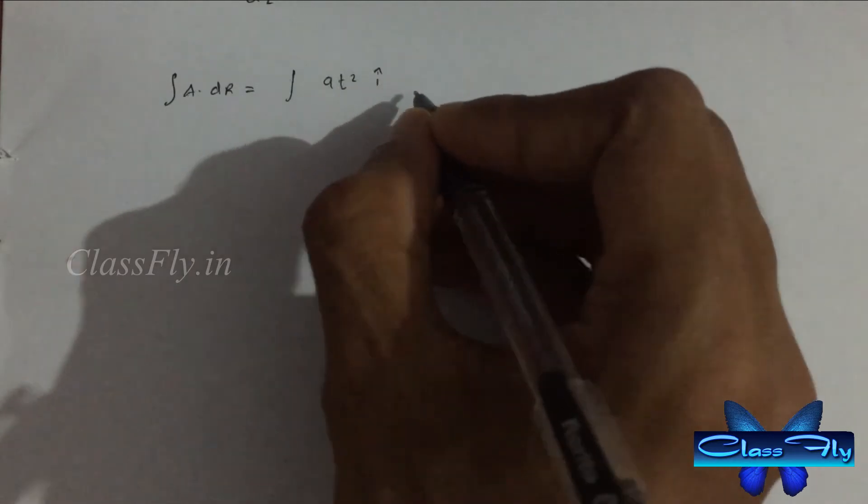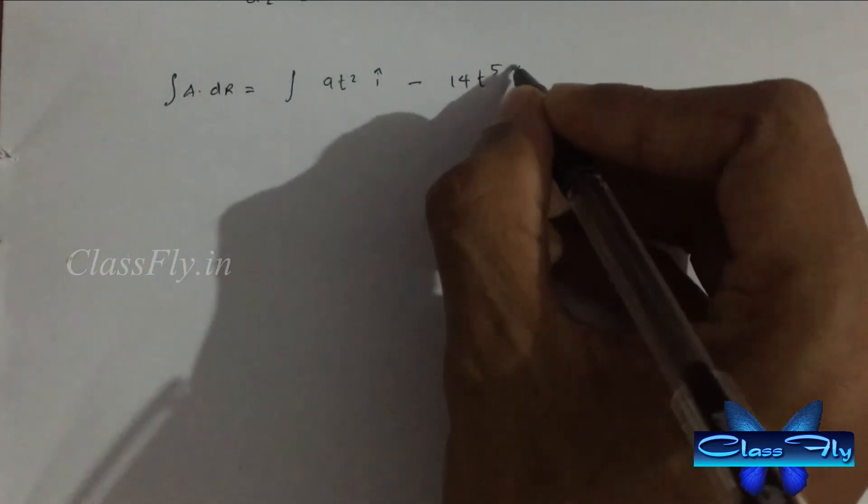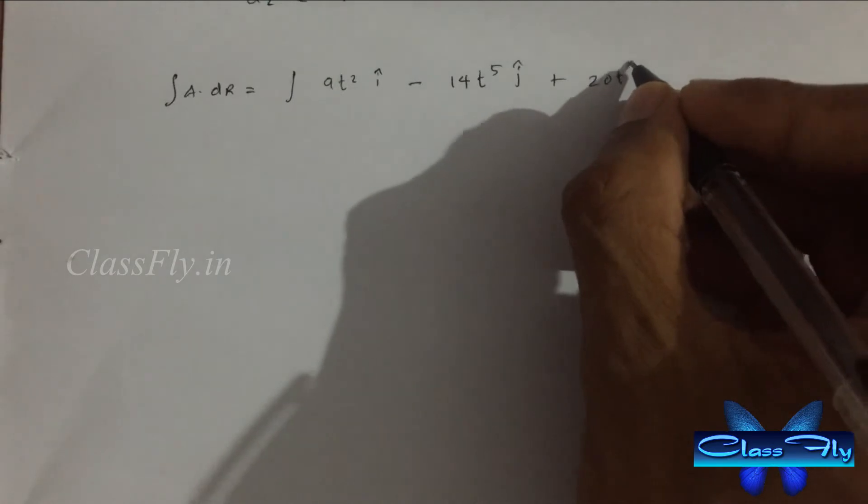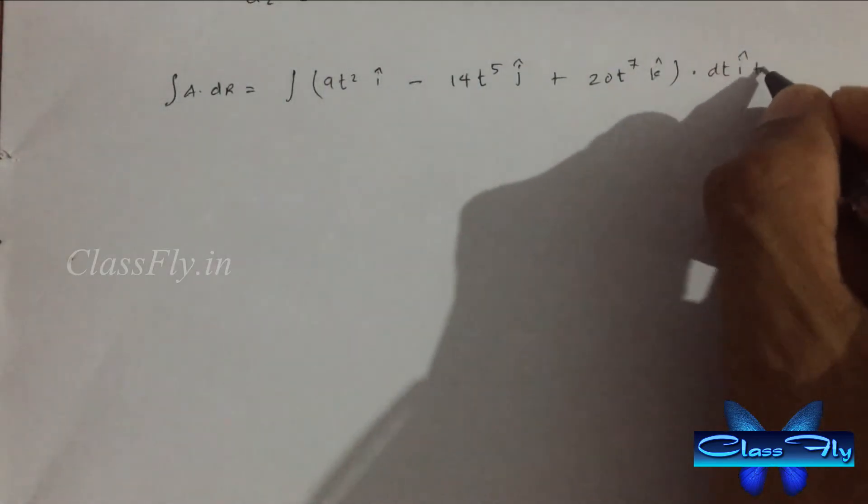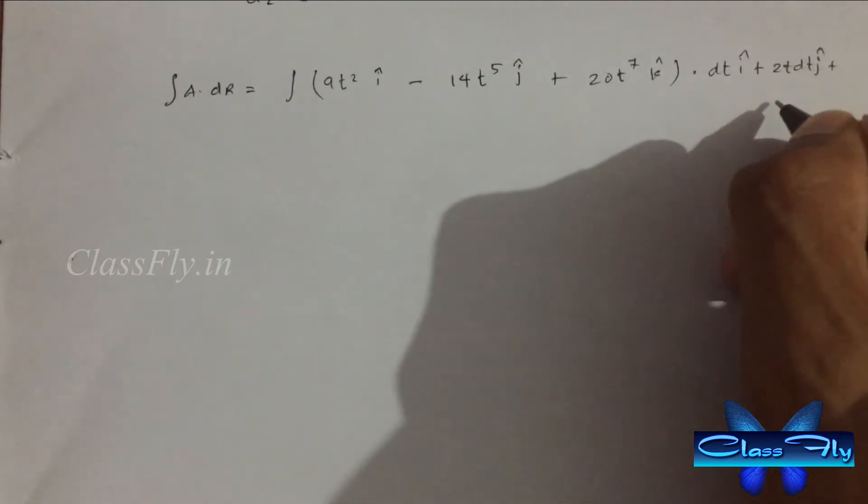Now, integral A dot dr equals integral 9t square i cap minus 14t raised to 5 j cap plus 20t raised to 7 k cap dot dt i cap plus 2t dt j cap plus 3t square dt k cap.